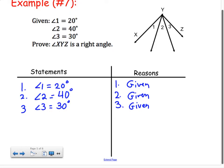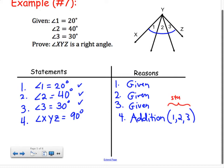Well, from looking at the diagram, I can see that angle XYZ is made by adding up angles one, two, and three. So, what I'm going to say here is angle XYZ equals 90 degrees, and the reason for that is addition, because I'm adding 20, 40, and 30. So, I'm going to write addition, and here what I'm going to write in my reference is the things that I'm adding together. I'm adding together the angles mentioned in steps one, two, and three. Notice that this one, two, and three are referring to the steps, not the angles.